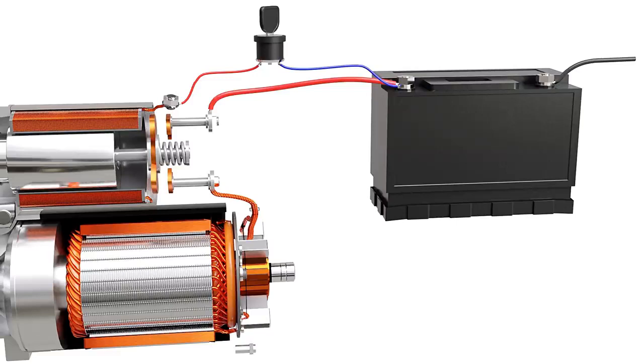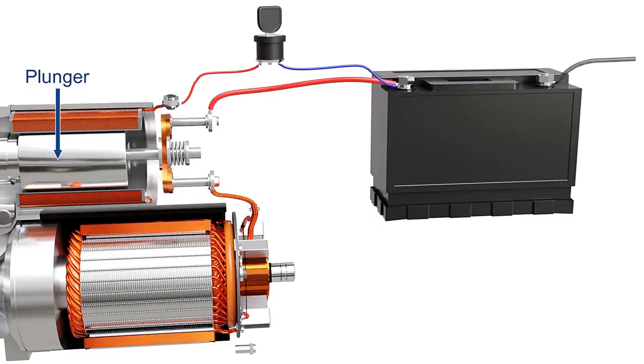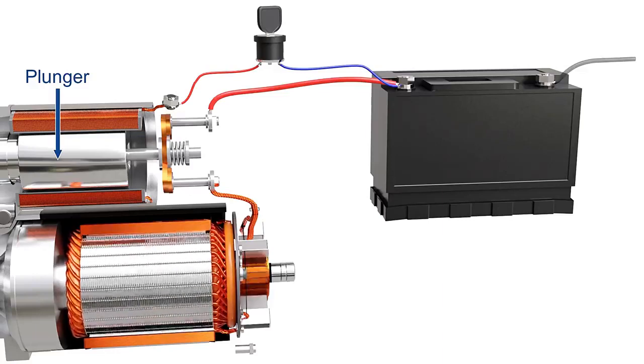As the ignition switch is turned on, the solenoid gets energized. A moving core known as a plunger slides along the coil, which connects two copper terminals of a contactor switch. This completes the circuit from the battery to the motor and causes the rotor to spin.